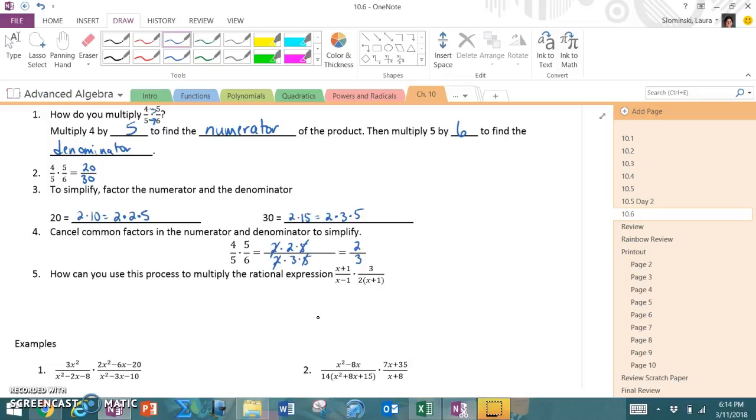So how can we use this process to multiply the rational expressions x plus 1 over x minus 1 times 3 divided by 2 times x plus 1? Well, my first step, I can do what we said. We multiply top times top. So I'd have x plus 1 times 3 over x minus 1 times 2 times x plus 1.